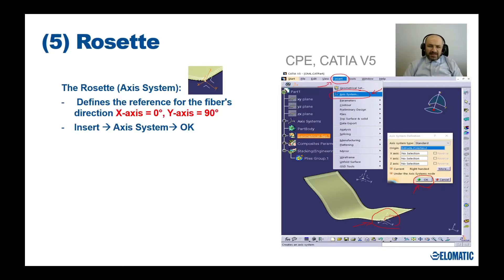The next step when modeling composite materials in CATIA is the definition of the rosette. The rosette is simply an axis system which defines the reference for fiber direction. The X axis is 0 degrees and the Y axis is 90 degrees. It is added by going to Insert > Axis System, and you define where you want your rosette to be placed.